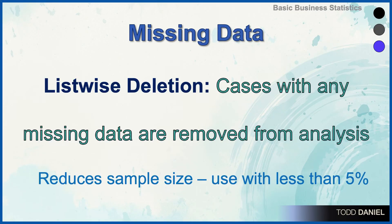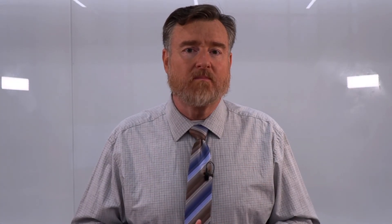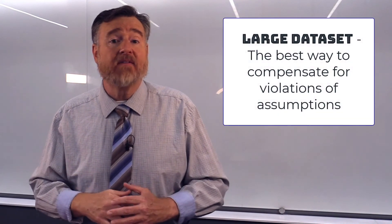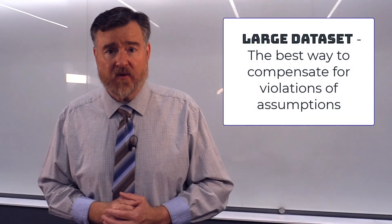The first is that we could use list-wise deletion and remove any cases that have any missing data from our analysis. Any case with even a single missing data point is entirely removed from our analysis. The limitation to this approach is loss of power — you are decreasing the sample size. Therefore, you would only use list-wise deletion if you've checked your data set and determined that 5% or fewer of the cases have missing data, and that you have a large enough data set to compensate for those losses.